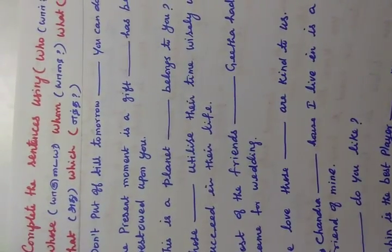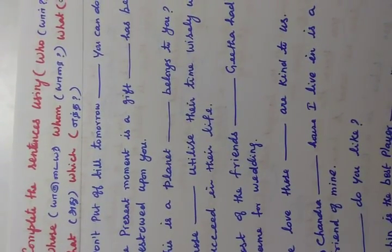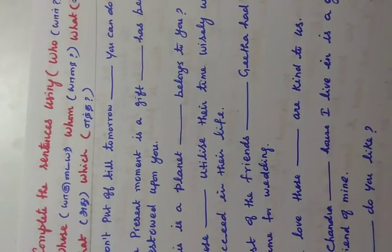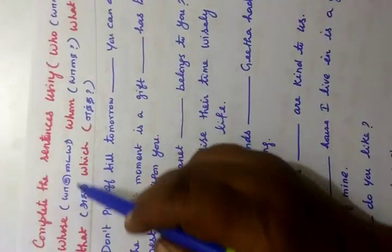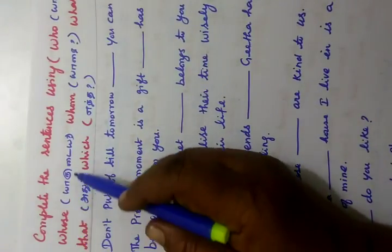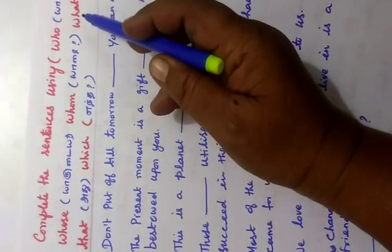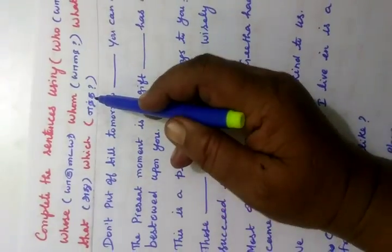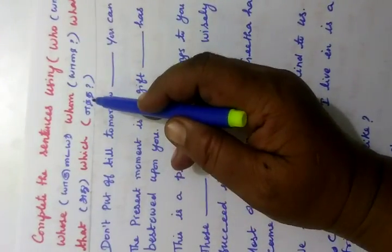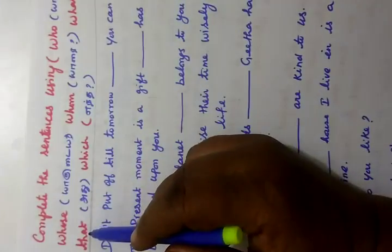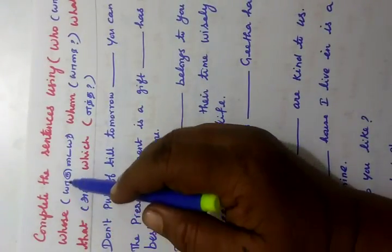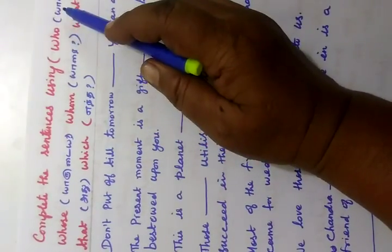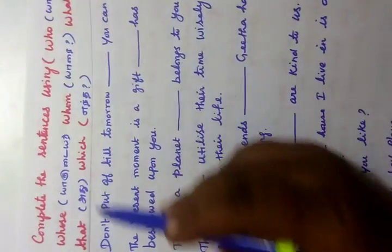Now we see some more examples. Complete the following sentences using who, whose, whom, what, that, and which. 'Who' refers to a person, 'whose' shows possession, 'whom' is the object form, 'what' means 'enna', 'that' means 'adhi', 'which' means 'enna' — as in 'which book', 'which class'. For example: 'which book', 'whose book', 'whom do you love', 'what you can see', 'who are you'.